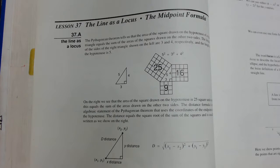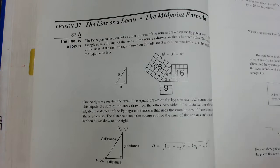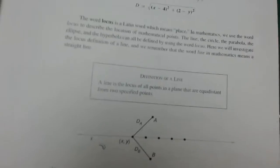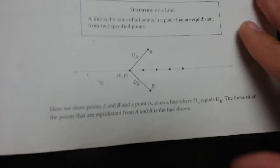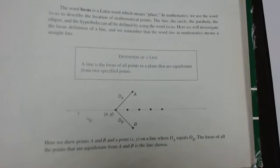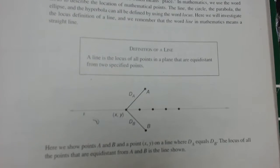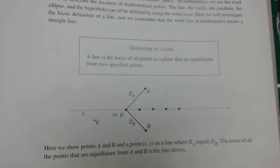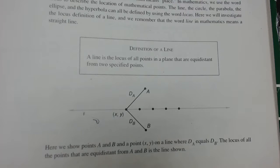Line is a Locus — it's just a concept of how to view a line that will help us understand the application of the distance formula. Locus more or less means the collection of all the points of a specific definition. For example, if we were to use the word Locus to define a circle, we would say a circle is defined as the Locus of all the points that are the same distance from a single point.